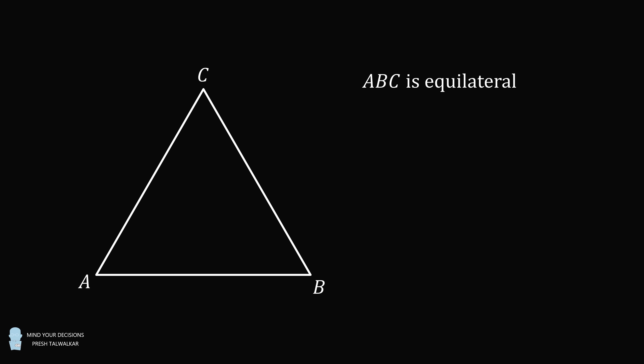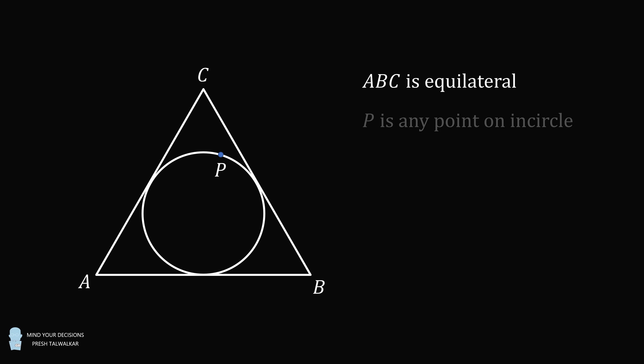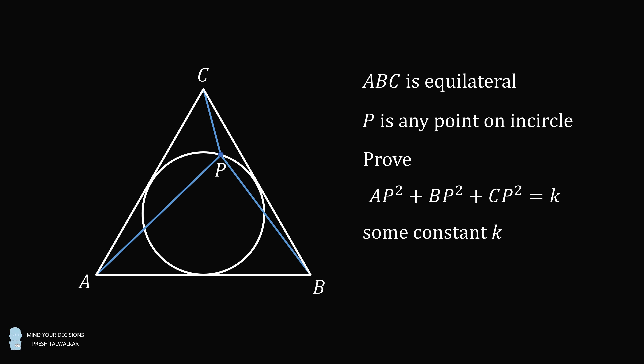Hey, this is Presh Talwalkar. You have an equilateral triangle ABC. Construct its in-circle, and let P be any point on its in-circle. Construct AP, BP, and CP. The challenge is to prove AP squared plus BP squared plus CP squared is equal to some constant K. Even as P goes around any point on the in-circle, the sum of the squared distances from the vertices of the triangle to point P is always a constant value.